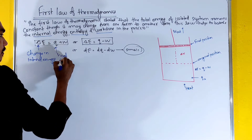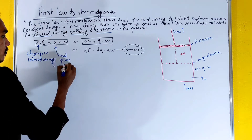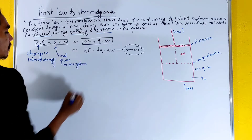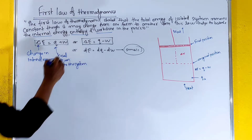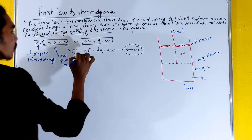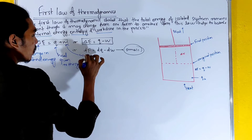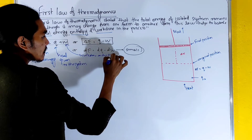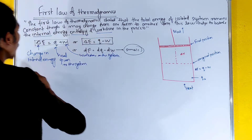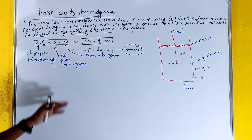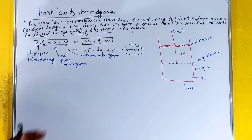Here q is the heat given to the system, and w is the work done on the system.